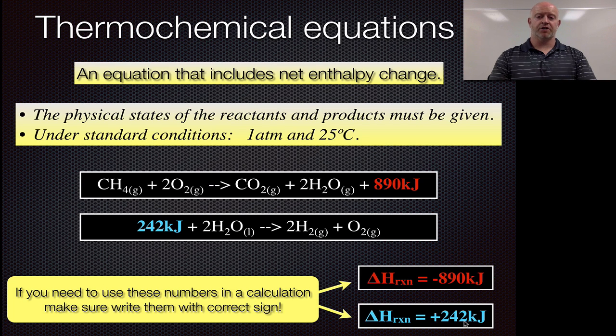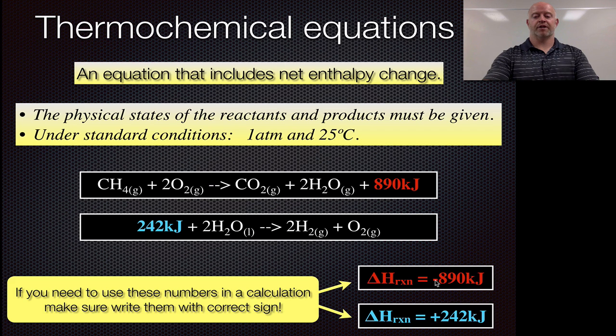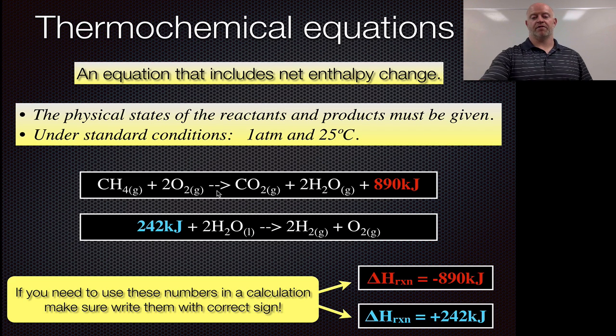That becomes important, because as we start looking at different chemical reactions, this one tells us that it's exothermic and releasing. This one means it's absorbing. So very different things in terms of the chemistry, keeping track of what's negative, what is positive. So make sure you do that if you pull numbers off of these balanced equations.